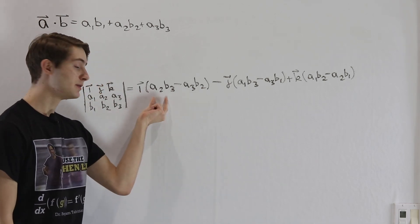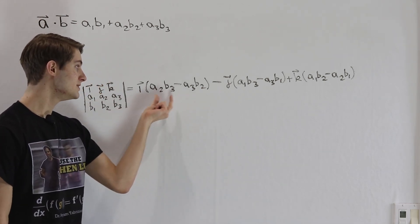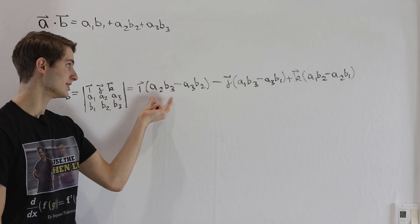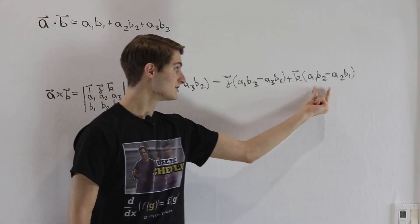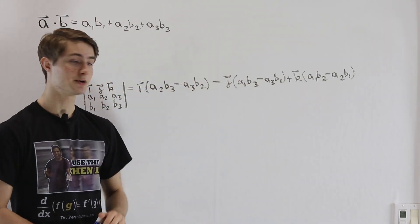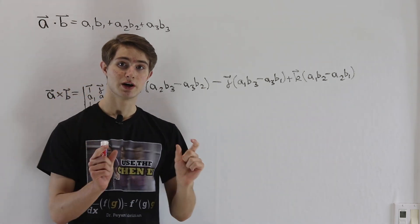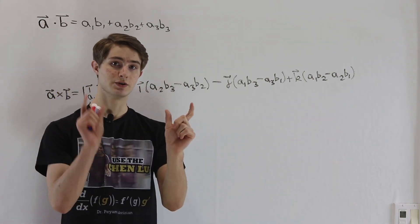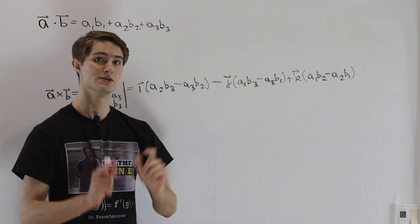notice here we have a component of A and a component of B multiplied together — and the same applies throughout every single part. Every single part of these is a product of two components, one from A and one from B.